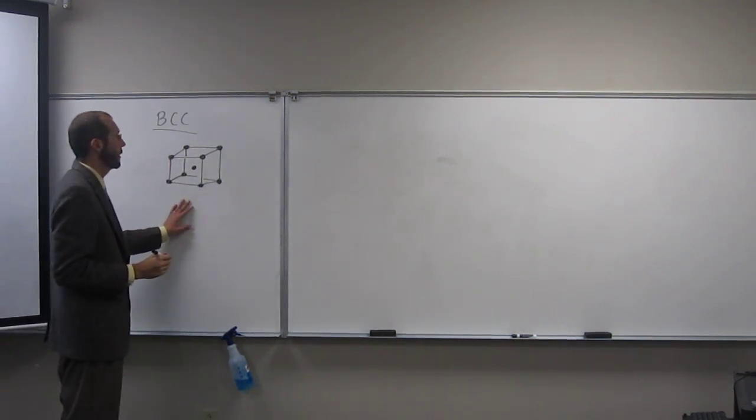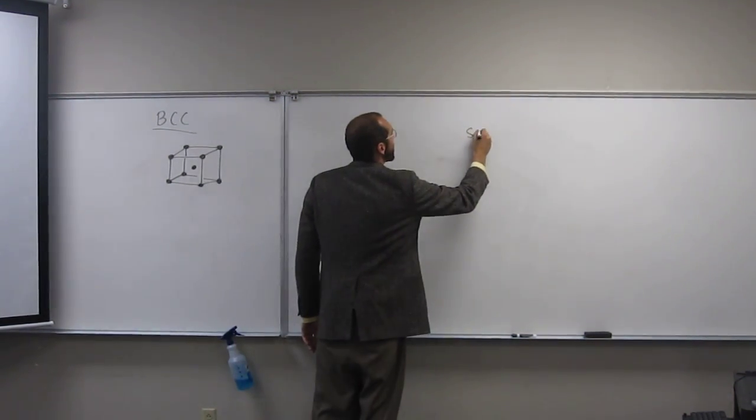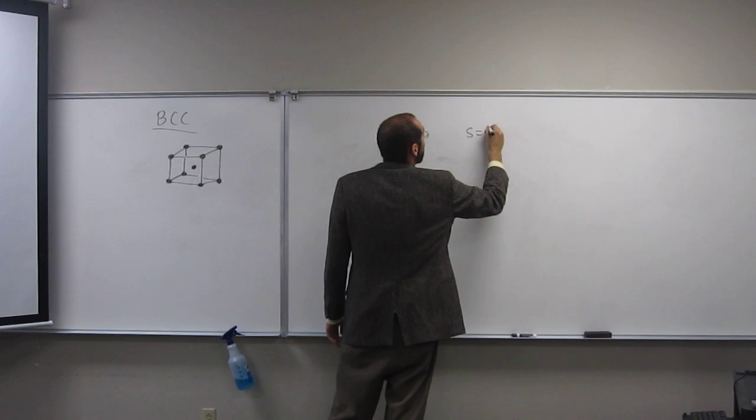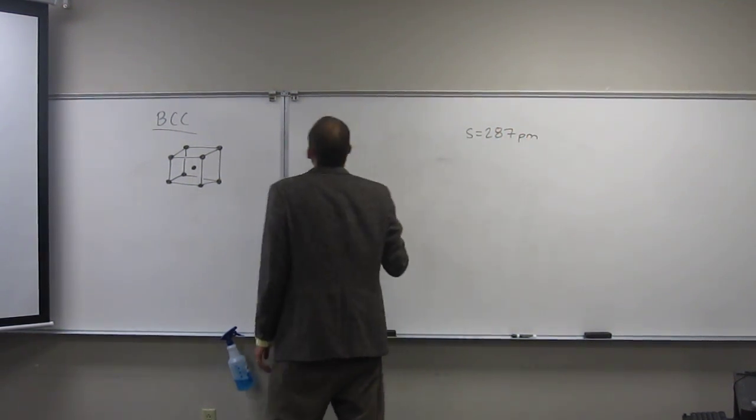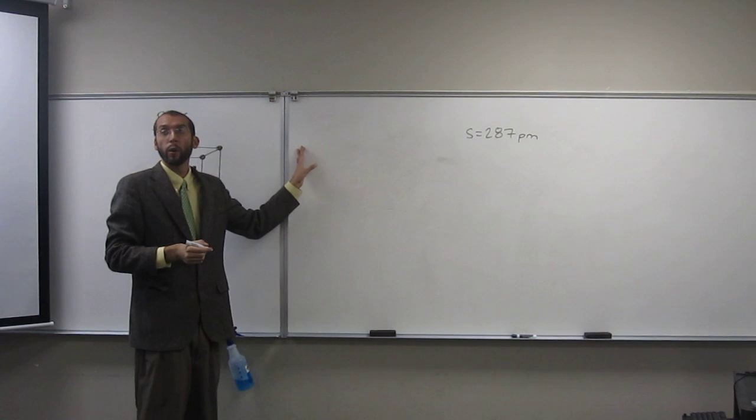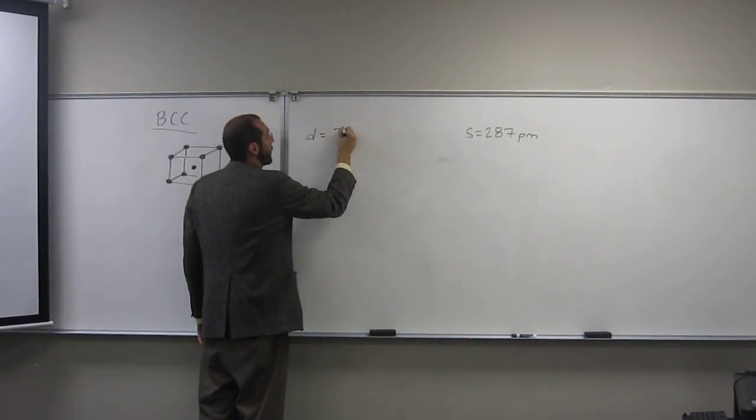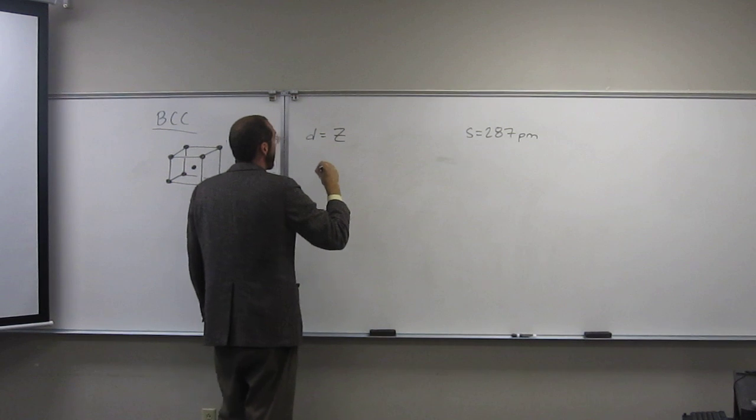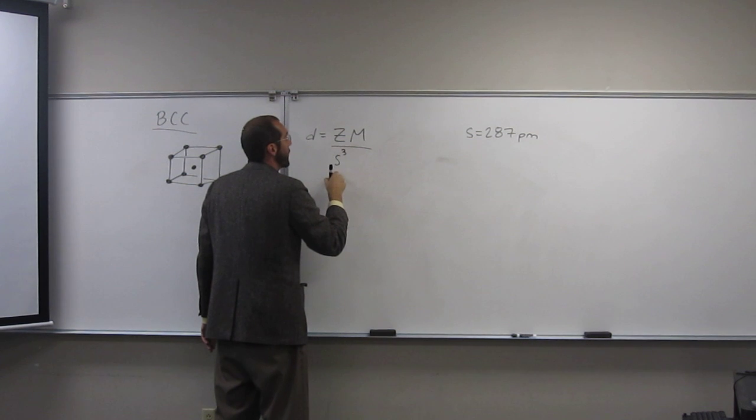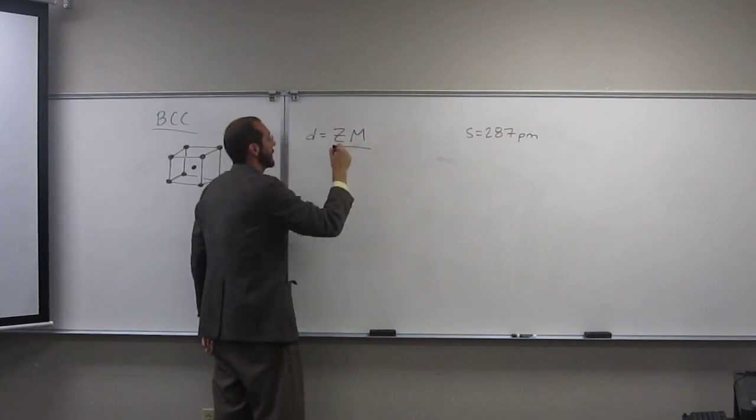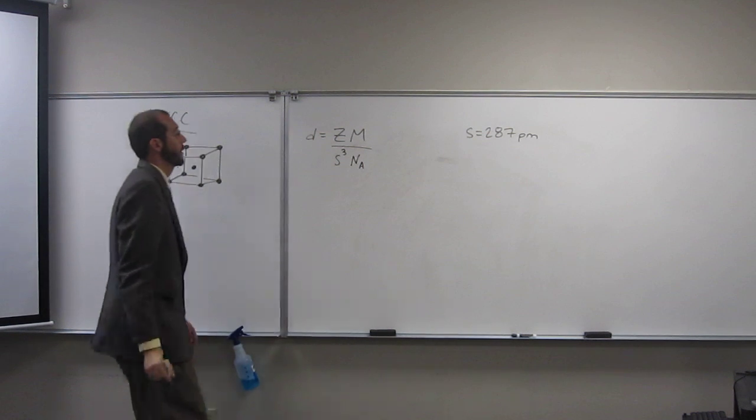So when we do, well let's remember, it gives us S, right, so S is 287 picometers. But we have to remember the formula for density. Density equals Z times molar mass over psi cubed times Avogadro's number. Z is lattice points.